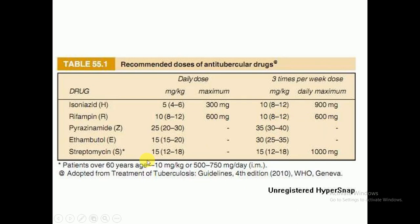Ethambutol, represented by E, is given at 15 to 20 mg/kg body weight with a daily maximum dose of 600 mg, and 25 to 35 mg/kg for three-times-per-week dosing. It is important to note that ethambutol cannot be given to children because it can stop the growth of long bones at the epiphyses.